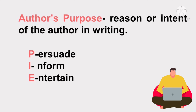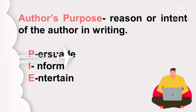We can simply identify the author's purpose by asking ourselves what is the reason or intent of the author in writing. An author's purpose may be to persuade, inform, or entertain. It is also possible to have two author's purposes in a text — a writer may inform and persuade the readers at the same time. Remember the PIE acronym in identifying the author's purpose.